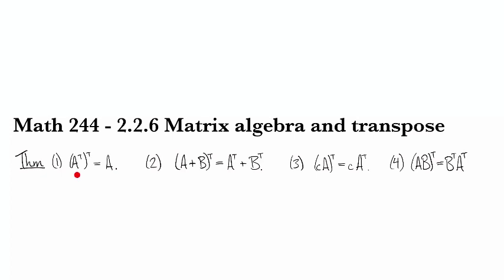The first one says that if you transpose a matrix and then transpose it again you get back to where you started from, which should be no big surprise because transposition is basically a reflection and if you do the same reflection twice you get back to the original thing.